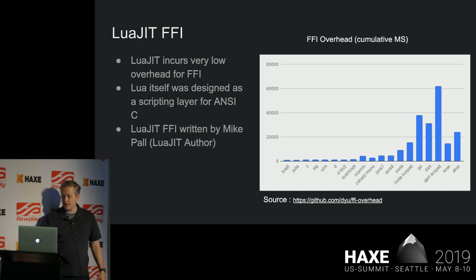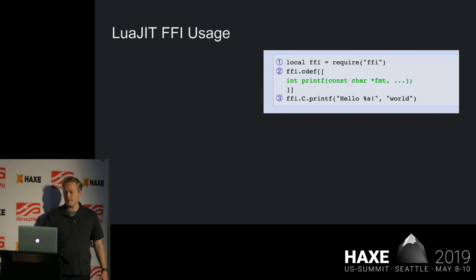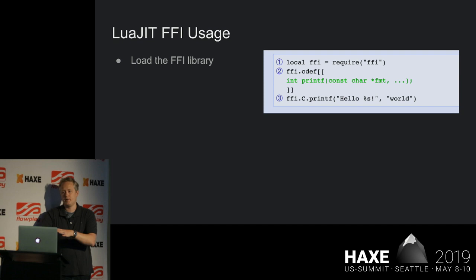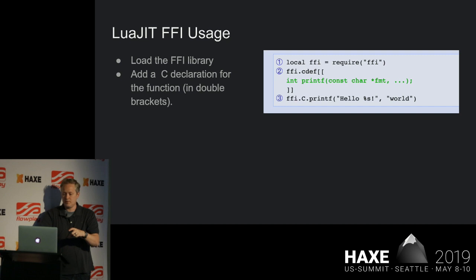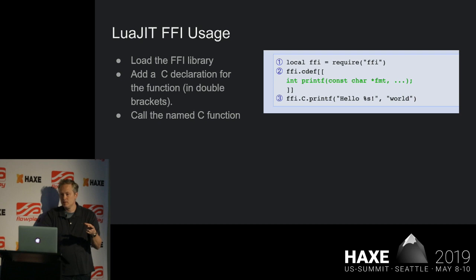That was the LuaJIT FFI overview. I want to talk about the usage, which I think is really slick. Here are the steps — this is Lua code taken directly from the FFI documentation. You load the library, then you add a C declaration. Inside these brackets — that's a Lua idiom for a multi-line string — we're giving a C declaration for a function, and then we're calling that function. That's it. That's all you need to do to hotwire directly into a C function call.